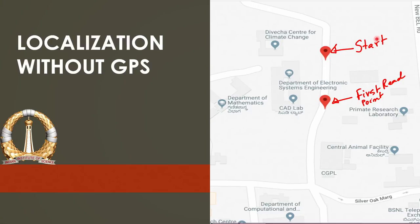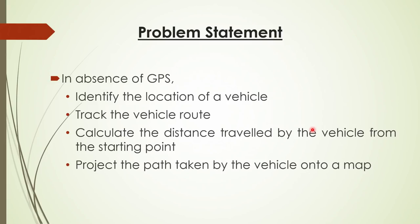The last GPS coordinate was available and the vehicle has started to move in this direction. It is moving in this direction and this is the point where the first read occurred. In the absence of GPS, you want to identify the location of the vehicle, track the vehicle route, and calculate the distance travelled by the vehicle from the starting point.